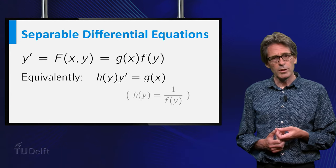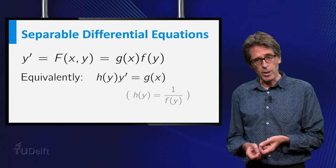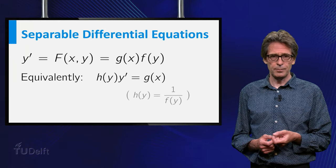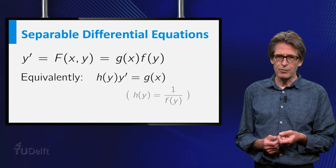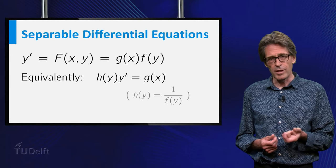Equivalently, they can be put in the special form h of y, a function of y, times y prime, equals g of x, a form in which the variables are separated. Note that the left hand side contains x implicitly, y is in fact y of x.